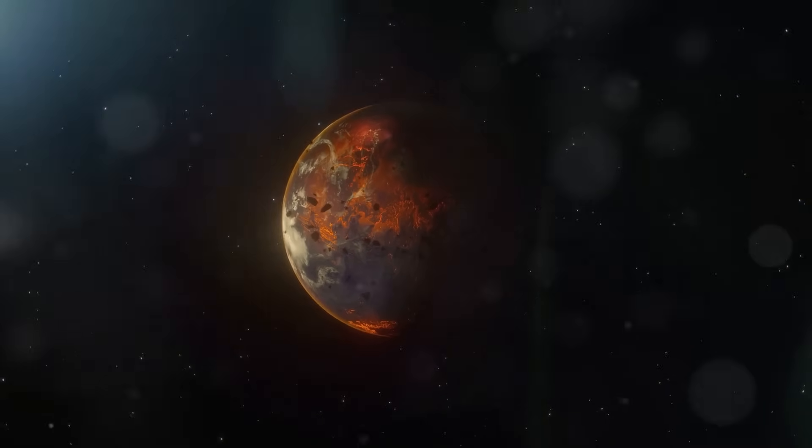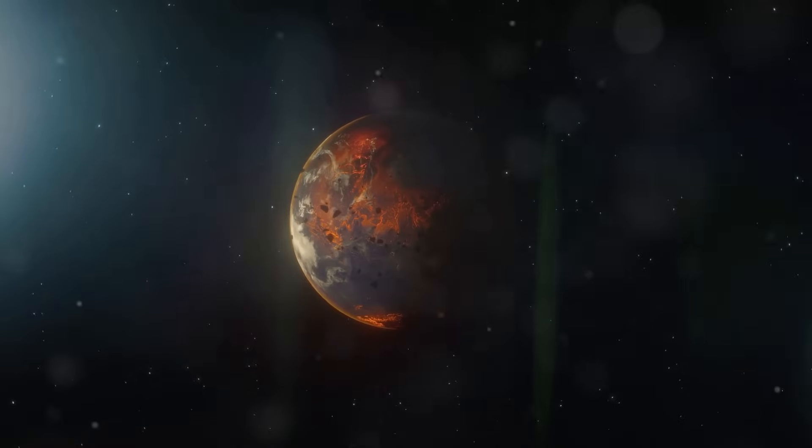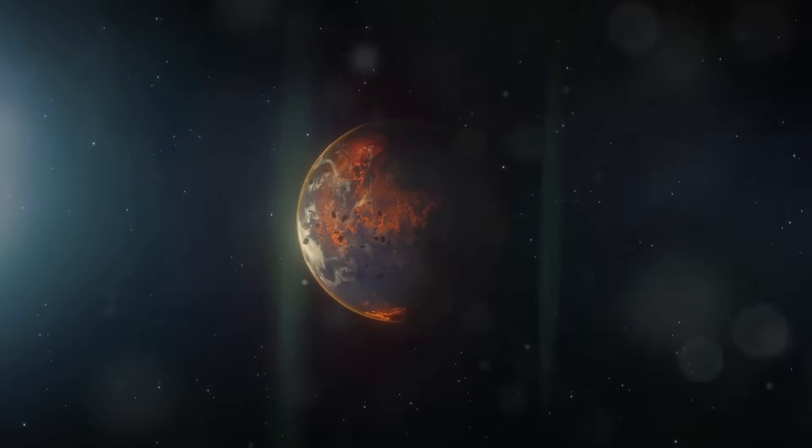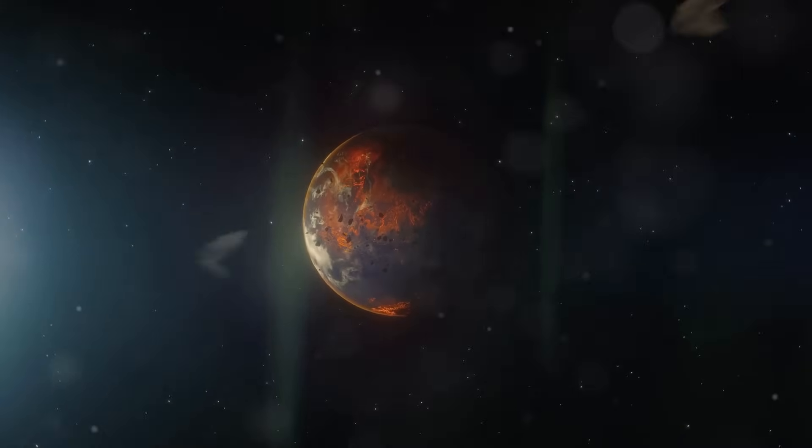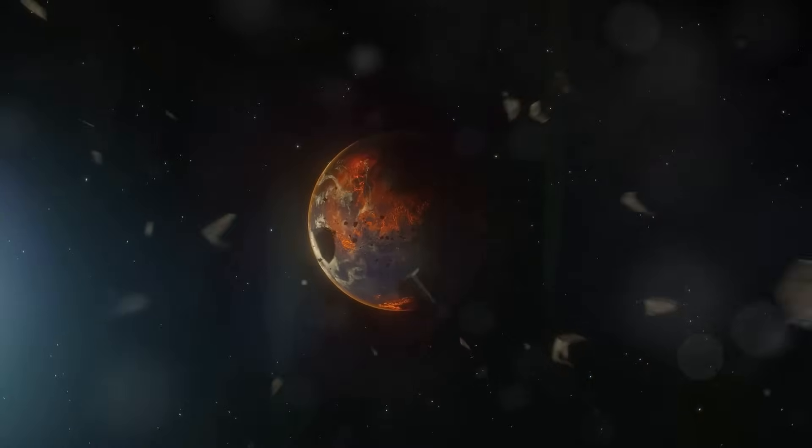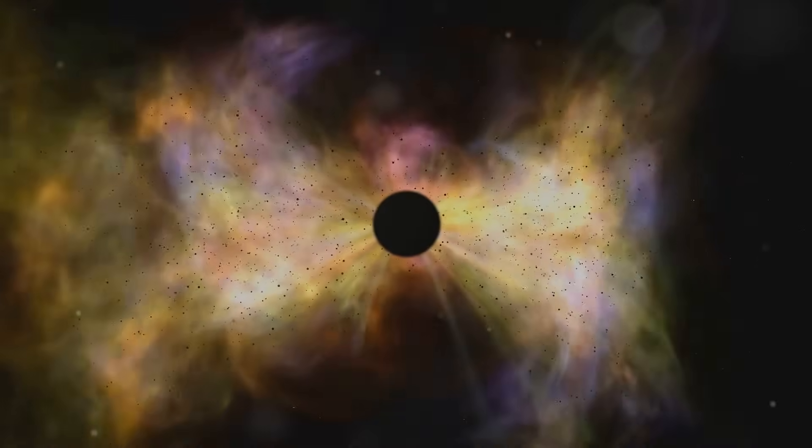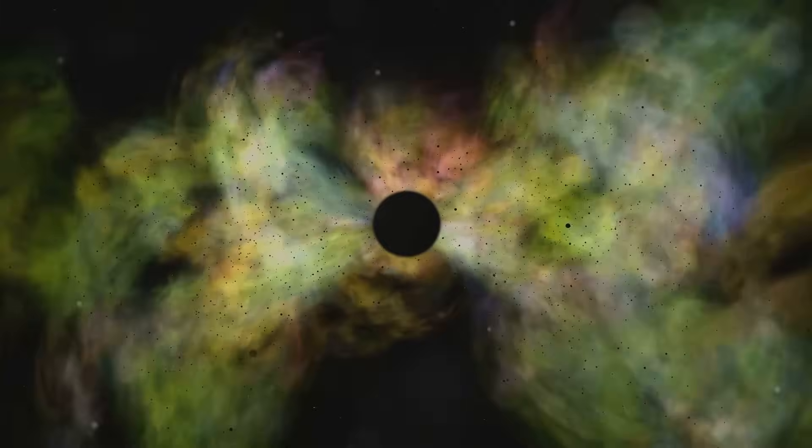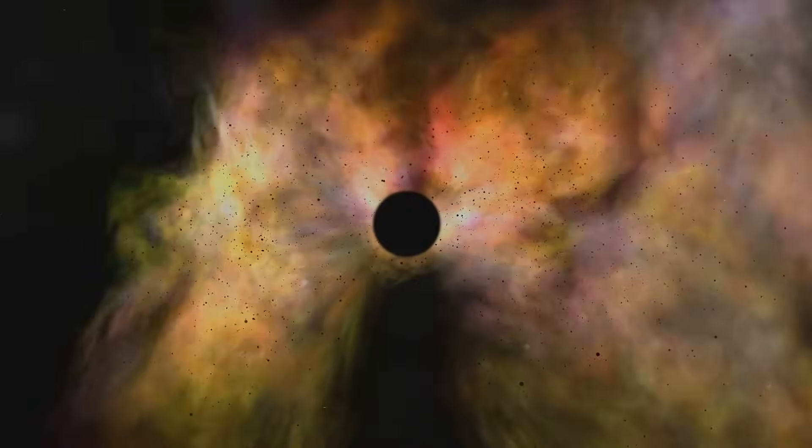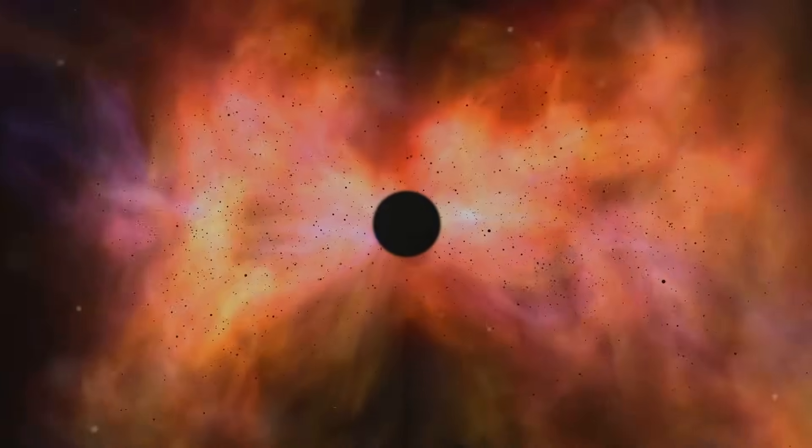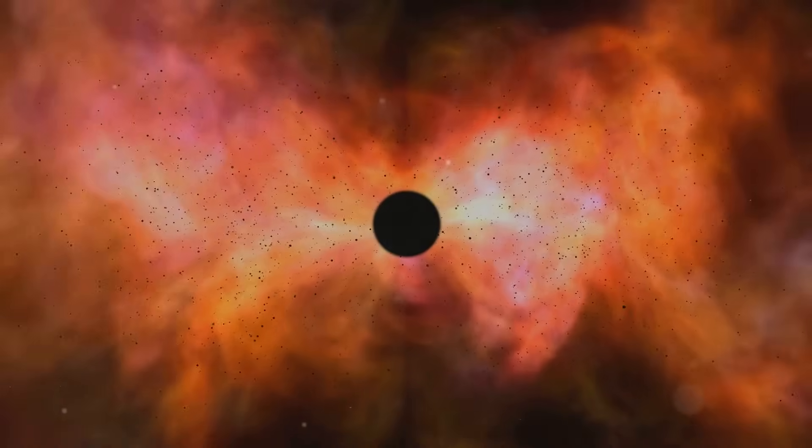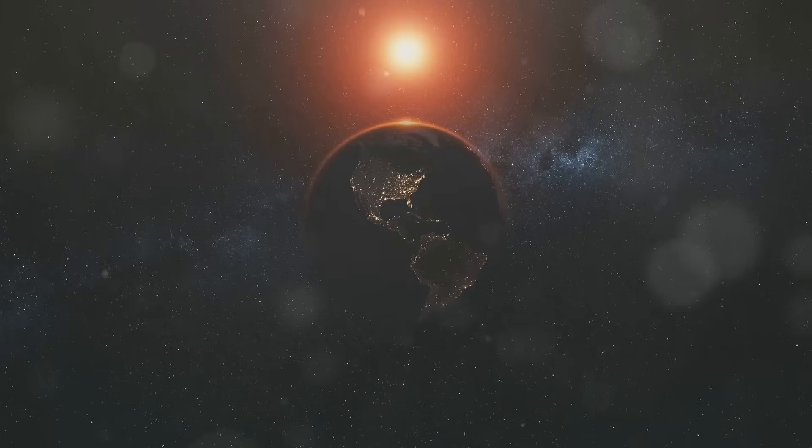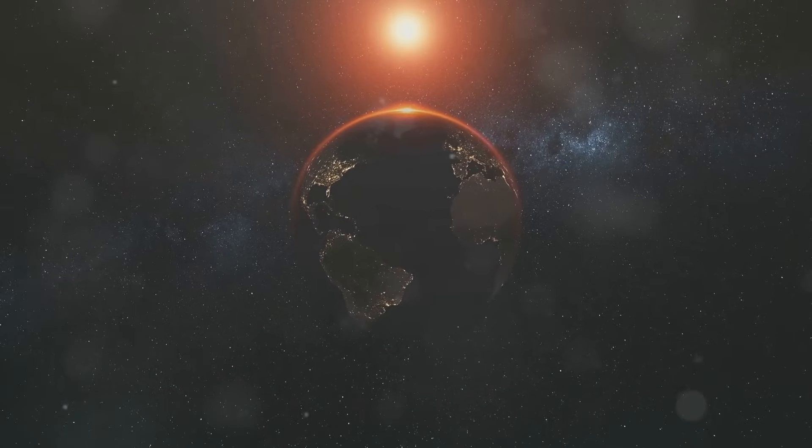As the Sun formed, the remaining material in the Solar Nebula began to collide and stick together. These collisions created larger clumps of matter, known as planetesimals. Through a process called accretion, these planetesimals continued to grow, eventually forming the planets. This was a time of intense activity, with countless collisions and mergers shaping the early Solar System. One of these growing planetesimals was destined to become Earth.